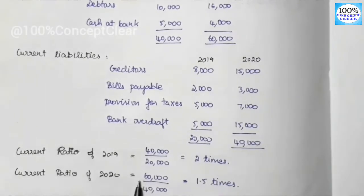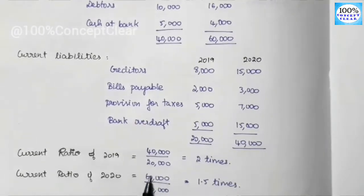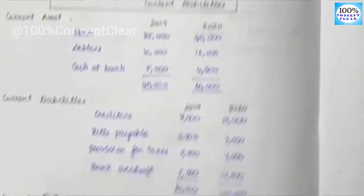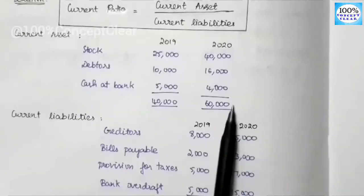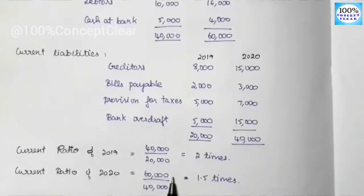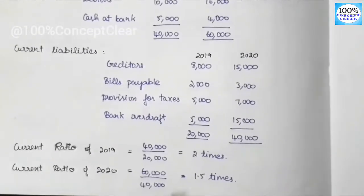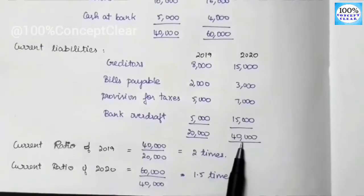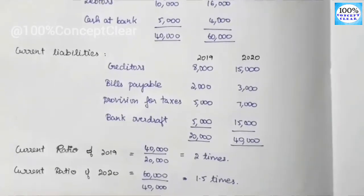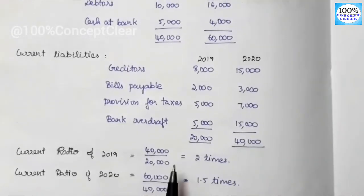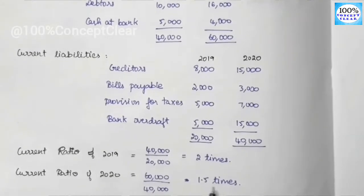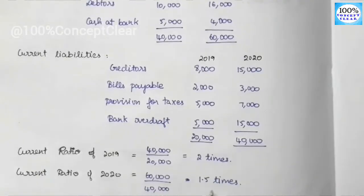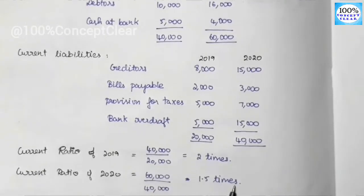Next year, 2020: current assets are 60,000 divided by current liabilities of 40,000. So 60,000 ÷ 40,000 = 1.5 times. The current ratio for 2020 is 1.5 times.